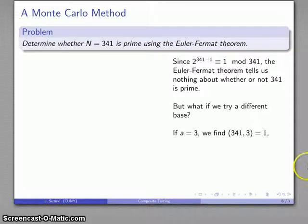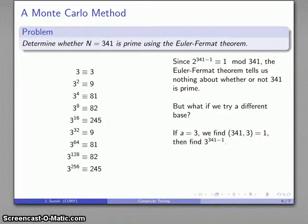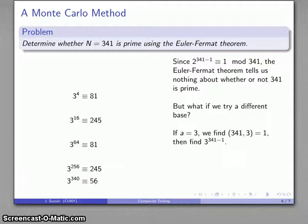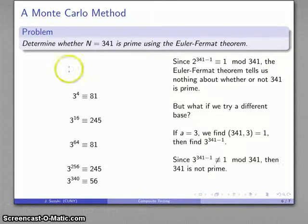Well, for example, if I try a equals 3, I find that 341 and 3 are relatively prime. So I'll evaluate 3 to the power 341 minus 1. Again, same procedure. And I find that it's congruent to 56. And so what does this tell me? Well, this tells me that because 3 to the power 340 is not congruent to 1, then 341 is not a prime number.